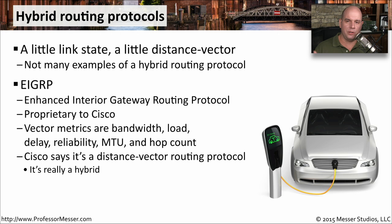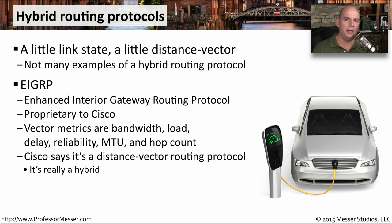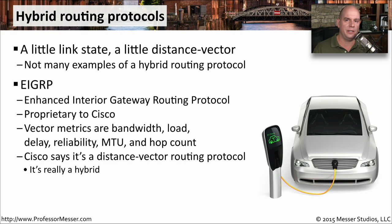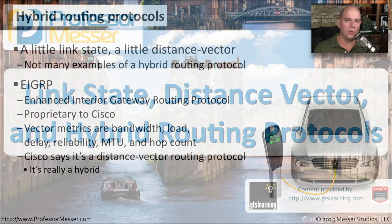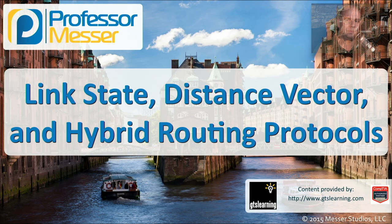There is some controversy and confusion about EIGRP. Cisco themselves say that it is a distance vector routing protocol, while others say it's a hybrid routing protocol. But looking at all the different characteristics that are examined, it seems to fit best into the category of a hybrid routing protocol.